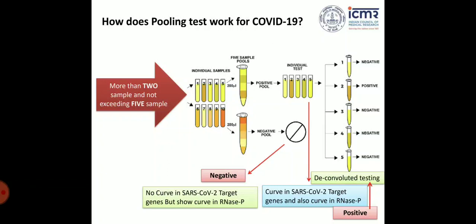That is why ICMR came out with some guidelines on how it should be tested. The reason we use RNase P is to cross-check whether the RNA extraction worked properly. When we pool samples, it is possible that the RNase P from some other patient shows positive, but the patient who is truly virus-positive may have had their RNA not extracted properly or may have inhibitors. You cannot clearly discriminate this — that is the problem.